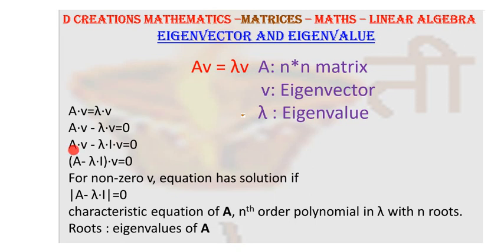And now here if you take out v as common, what you are left with is A minus lambda I into v is equal to 0.